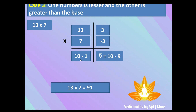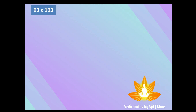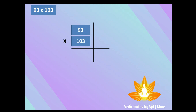Let's solve another example: 93 × 103. Both fall in case 3 — one is lesser and the other is greater than the base. The base is clearly 100. Deviations: 93 is 7 less than 100 (deviation −7), and 103 is 3 more than 100 (deviation +3). Now find the first part using diagonal addition.